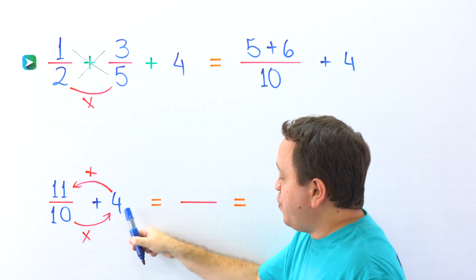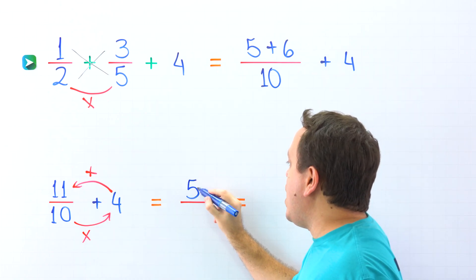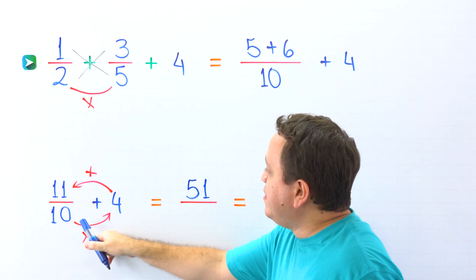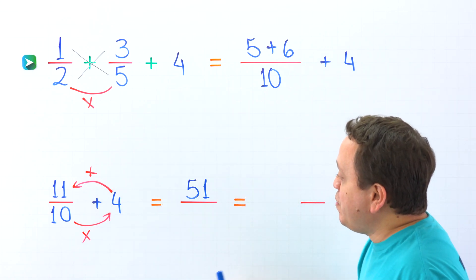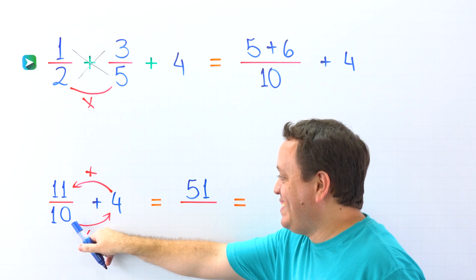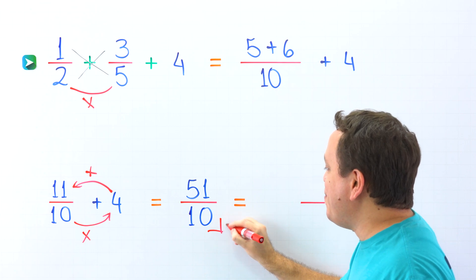Here we go. 10 times 4 is 40. Plus 11 give us 51. One more time. 10 times 4 is 40. Plus 11 give us 51. Finally, the denominator stays the same. 10 come over here. The answer is 51 tenths. Perfect!